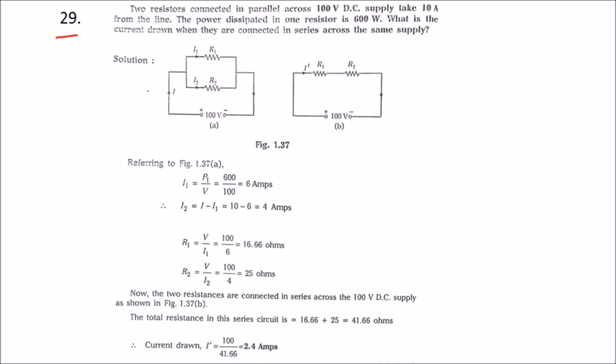It takes 10 amps from the line, so I will be 10 amps. The power dissipated in one resistor is 600 watts. So let us take R1, where the power dissipated will be 600 watts.